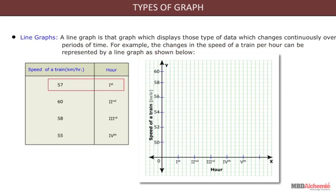In the first hour, the speed of the train was 57 km per hour. In the second hour, the speed of the train was 60 km per hour. In the third hour, the speed of the train was 58 km per hour. And in the fourth hour, the speed of the train was 55 km per hour.